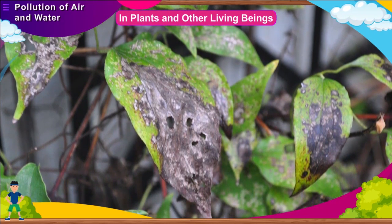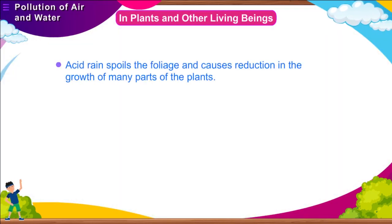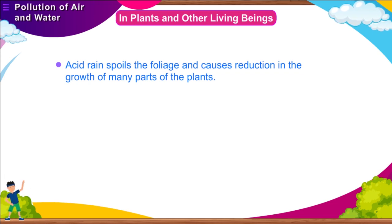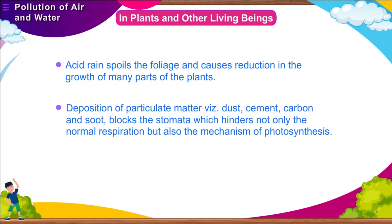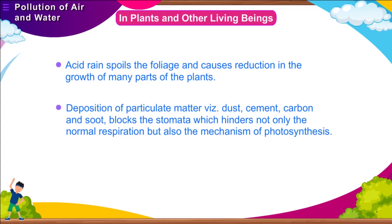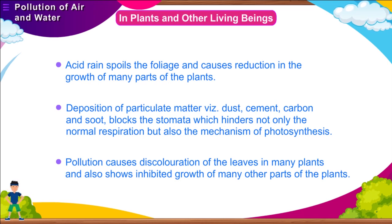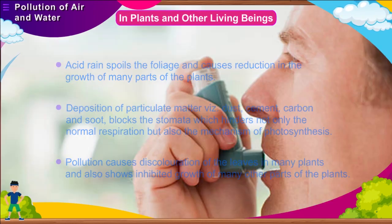The effects of air pollution on plants are briefly discussed below. Acid rain spoils the foliage and causes reduction in the growth of many parts of the plants. Deposition of particulate material — dust, cement, carbon and soot — blocks the stomata, which hinders not only normal respiration but also the mechanism of photosynthesis. Pollution causes discoloration of leaves in many plants and also shows inhibited growth of many other parts of the plants.